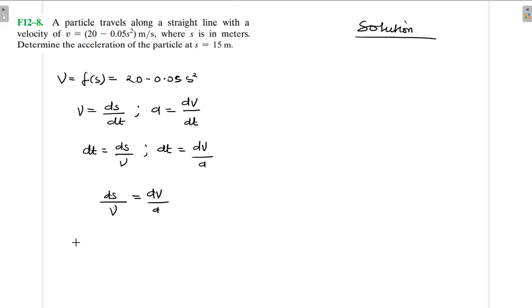When you look at this expression here, v = 20 - 0.05s², from this expression we are able to find the derivative of velocity with respect to position.